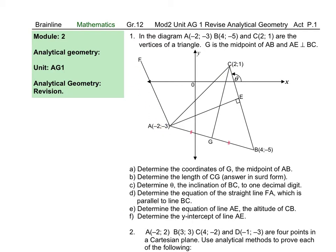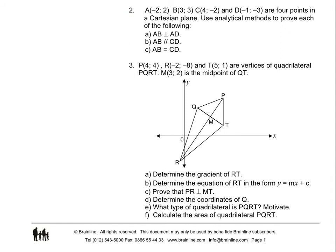Question E: determine the equation of line AE, the altitude of CB. Question F: determine the y-intercept of line AE. For question 2, we are given four coordinates — four points in a Cartesian plane. Use analytical methods to prove each of the following. Question A: determine the equation of line AB, which is perpendicular to AD.